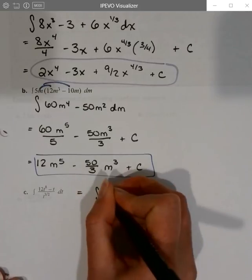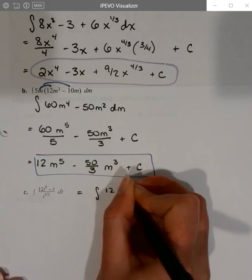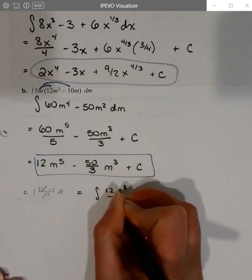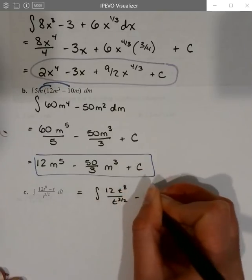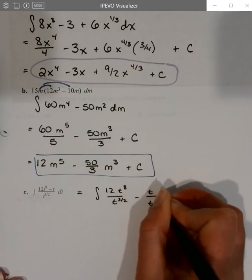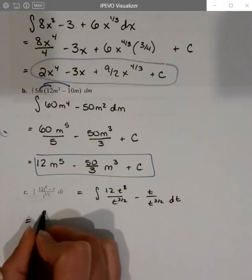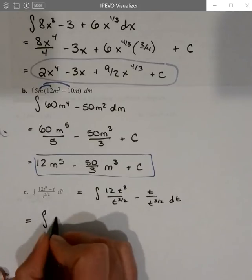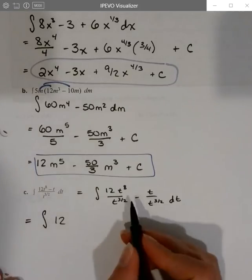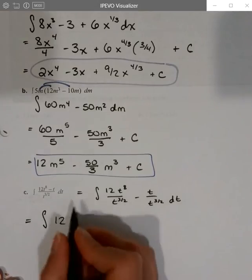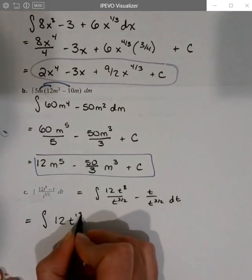If I can distribute that into 12t to the 8th, divided by t to the 3 halves, minus t over t to the 3 halves. We want to reduce each of those. And so that gives us, we're doing the integral of 12. Okay. So that's 16 halves minus 3 halves. That's t to the 13 halves.